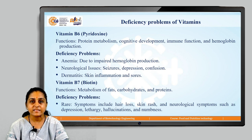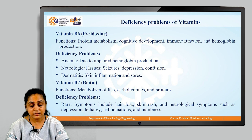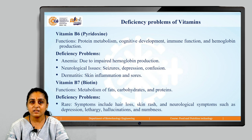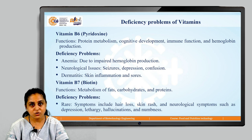Let us move on to vitamin B6, which is pyridoxine. The functions of vitamin B6 include protein metabolism, cognitive development, immune function, and hemoglobin production. The deficiency problems associated with this vitamin are anemia, neurological issues, and dermatitis. Anemia is due to impaired hemoglobin production. Neurological issues could include seizures, depression, or confusion. Dermatitis refers to skin inflammation and sores occurring on the skin.